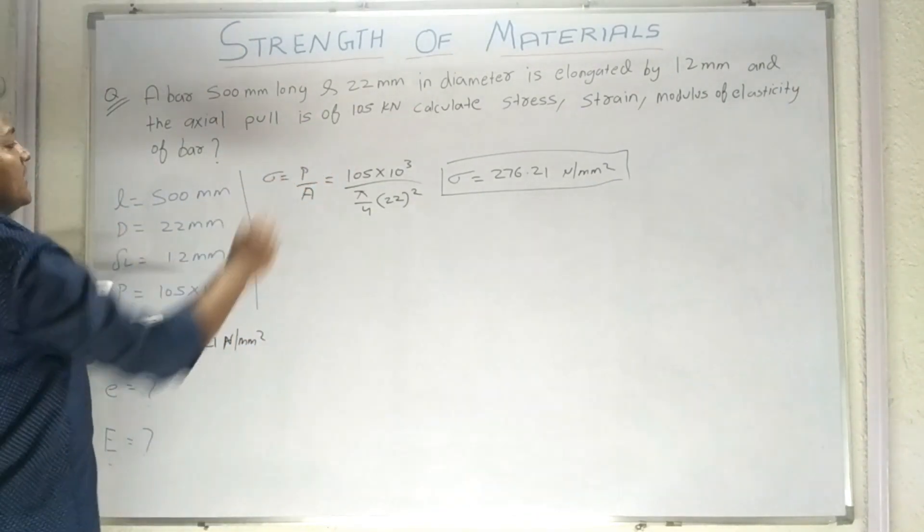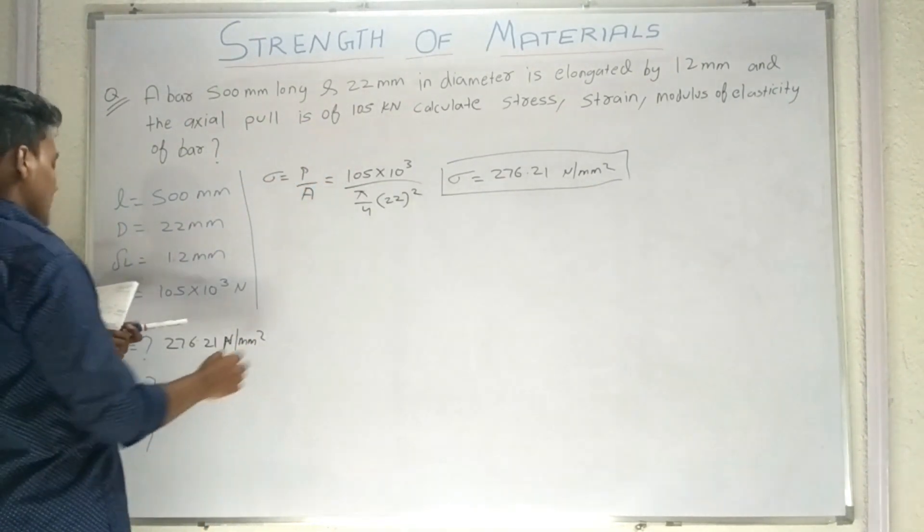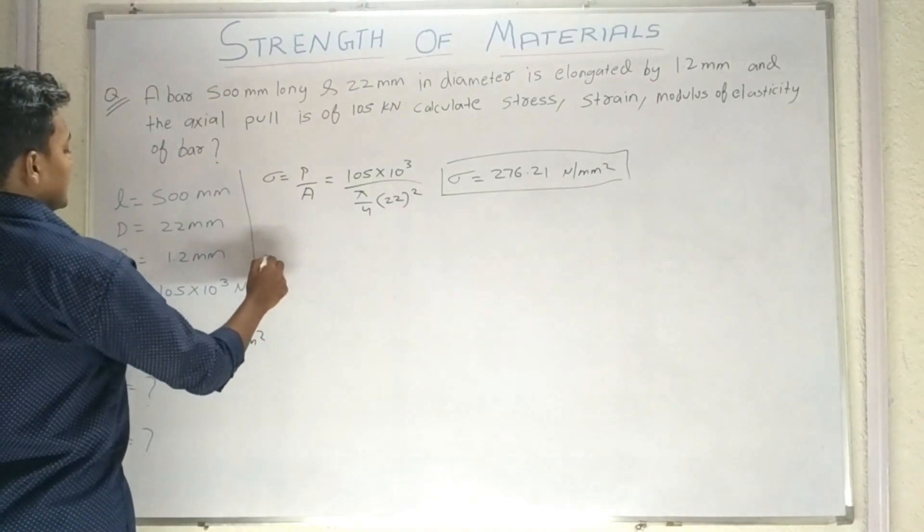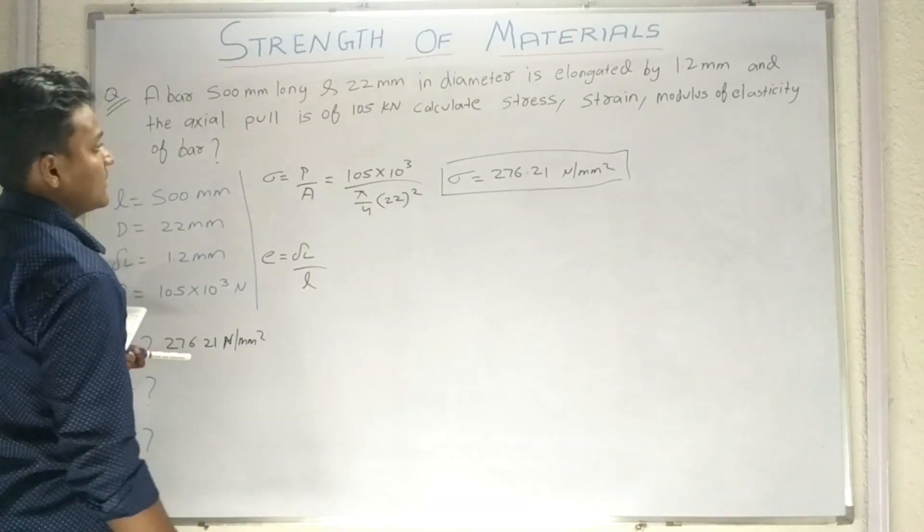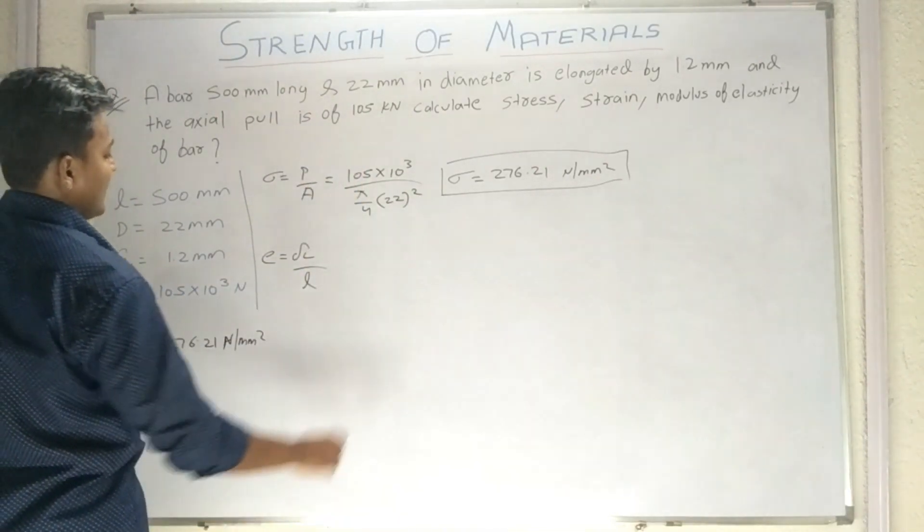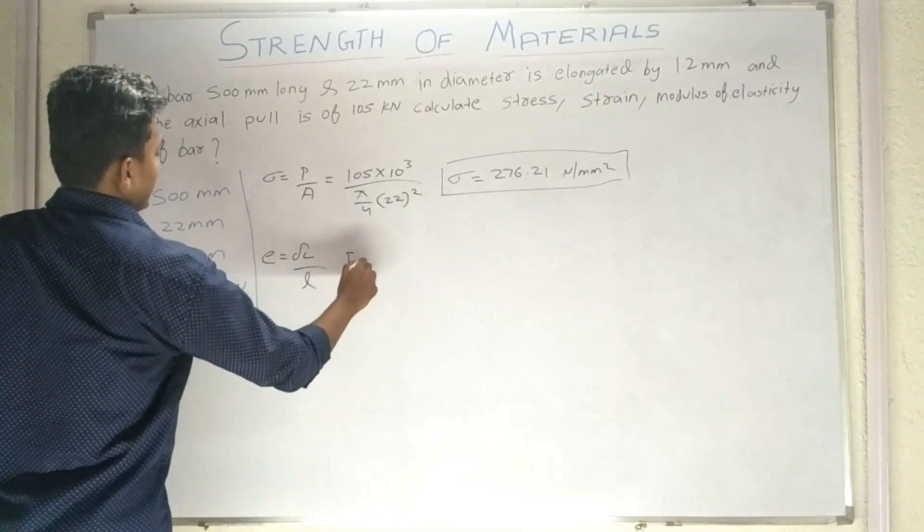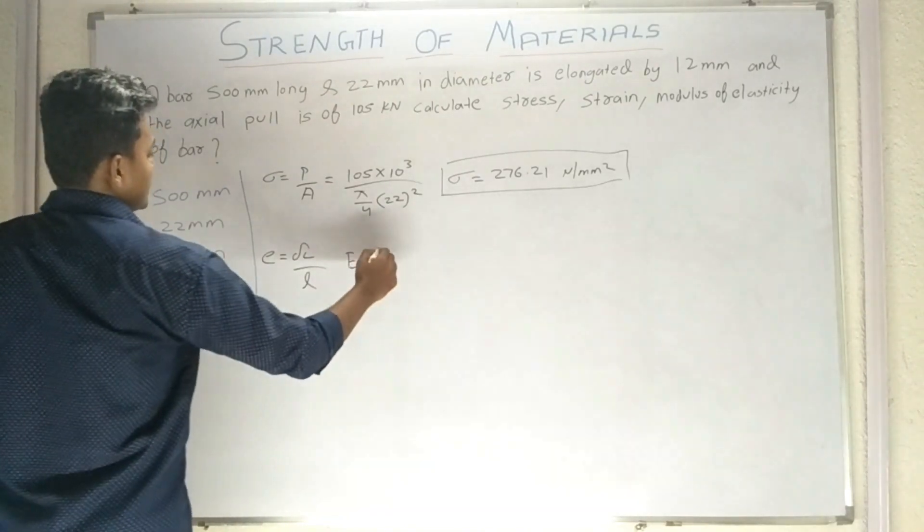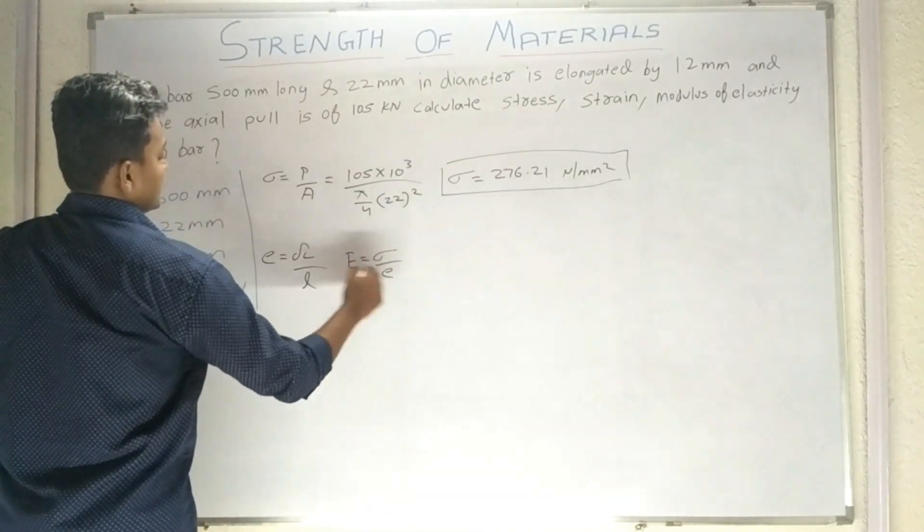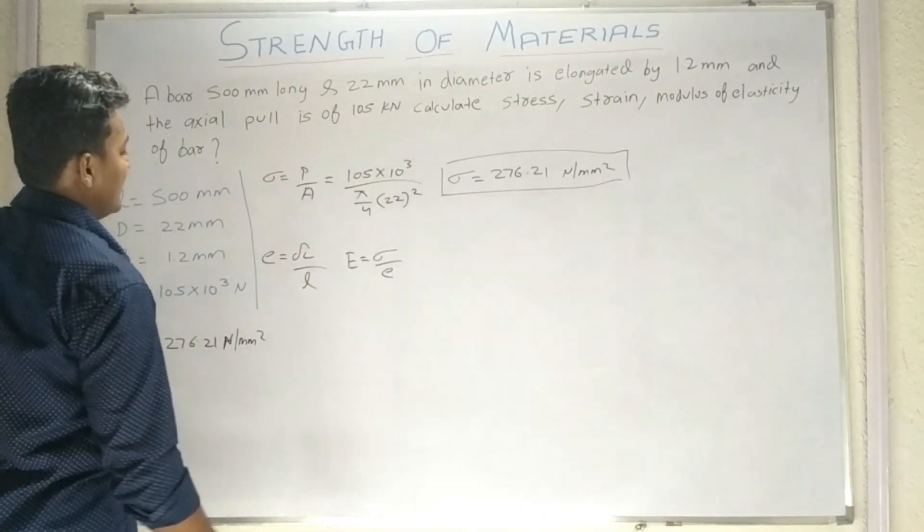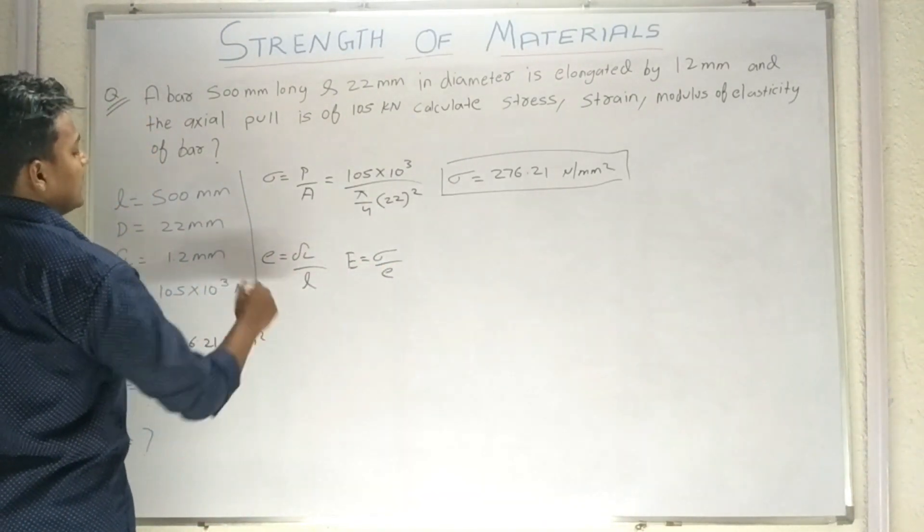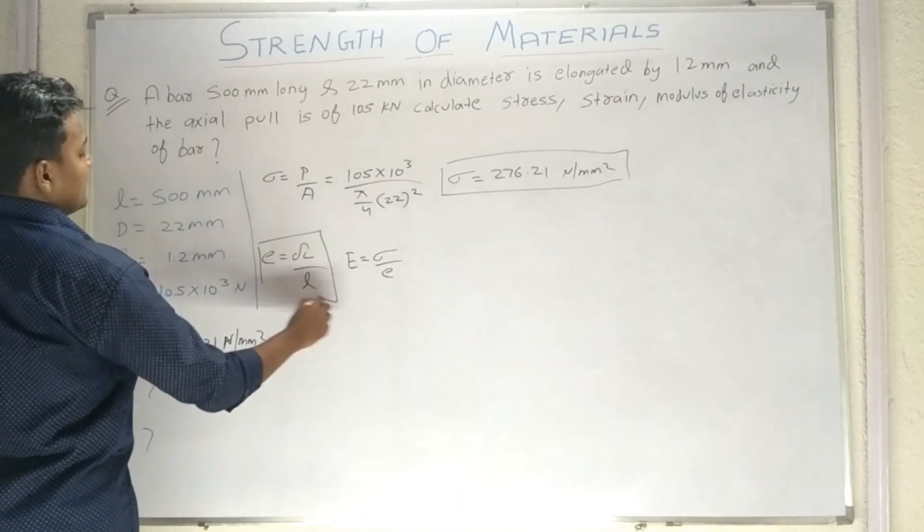Ab aata hai strain ke liye. So strain ke hamare paas do formula hai, so usme se hum ye wala formula lenge, delta L upon L wala. Modulus of elasticity wala jo aapke paas formula hai, jisme ye hota hai capital E equals to sigma upon small e. Lekin yaha par hamare paas modulus of elasticity nahi hai available, kyunki woh hi humne calculate karna ko bola hai. So abhi pehle ye wala formula lenge, jisme